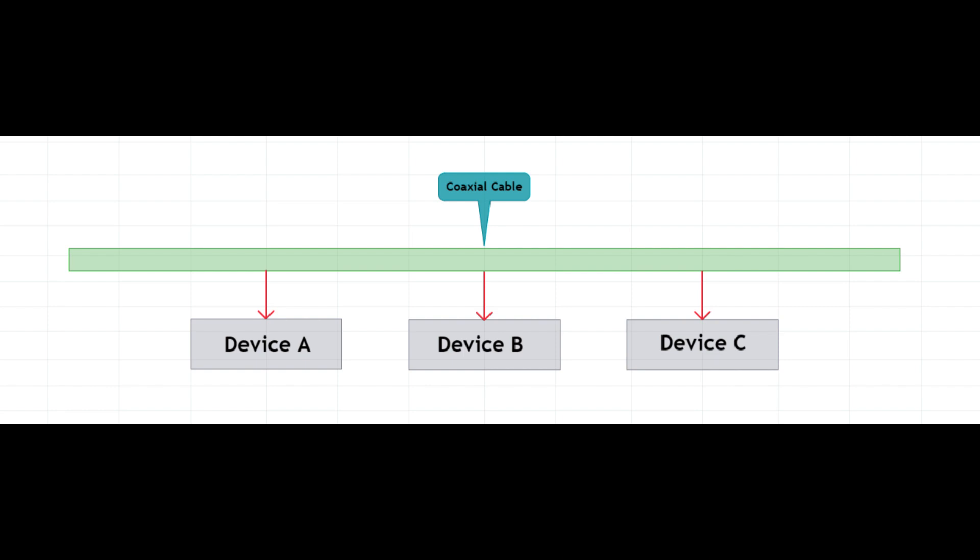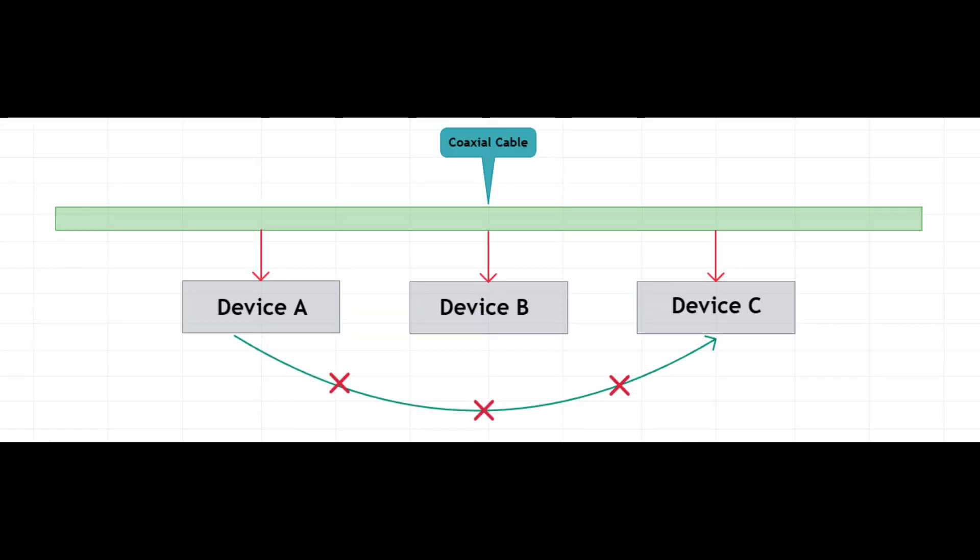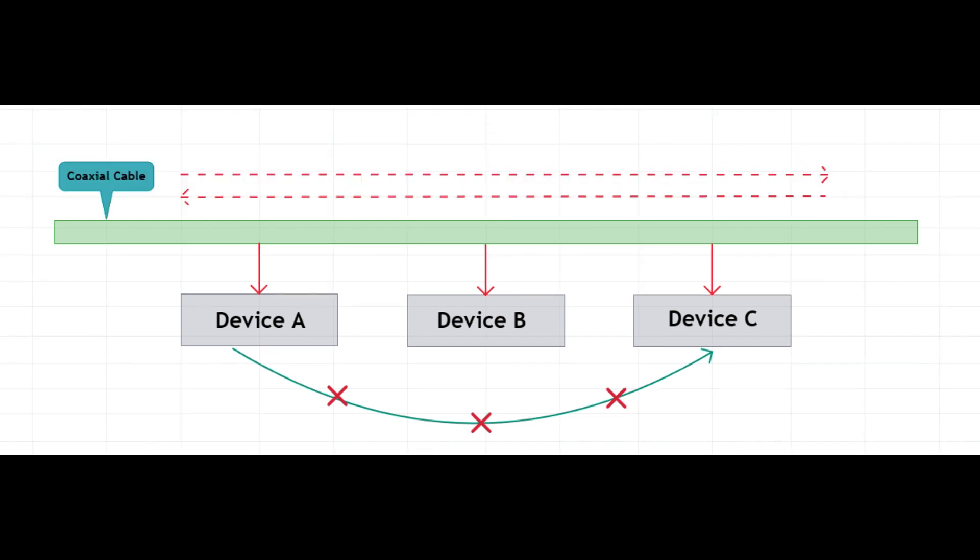Take a look at the corresponding image on the screen. For example, computer A sends data to computer C. Since this data will first visit computer B on the line, computer B will look at the data first. When computer B realizes that the data does not belong to it, it drops it back on the line and the data continues its journey. The data travels on the line until it finds the computer it was sent to. So when it reaches computer C, the data has been transmitted. Imagine this structure with several computers, it's chaos. In the image on the screen, you can see how the data travels back and forth.